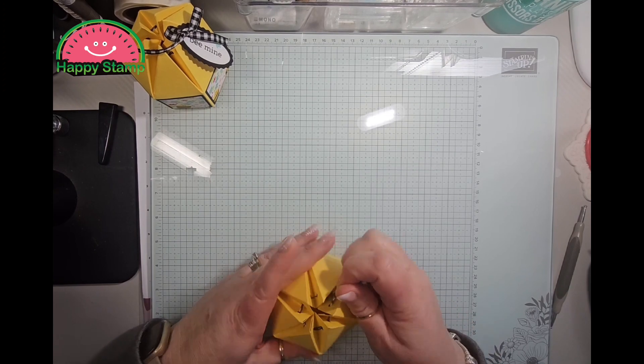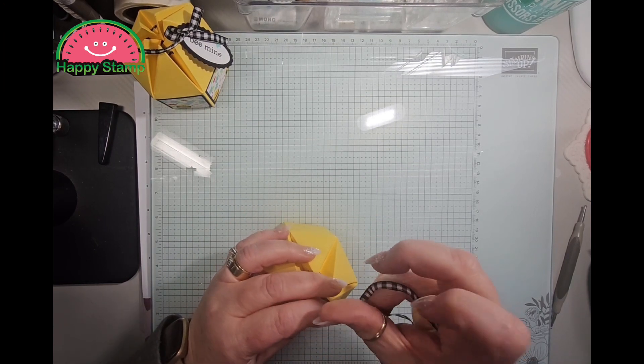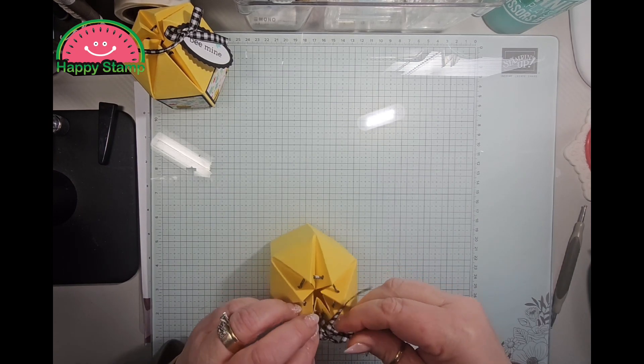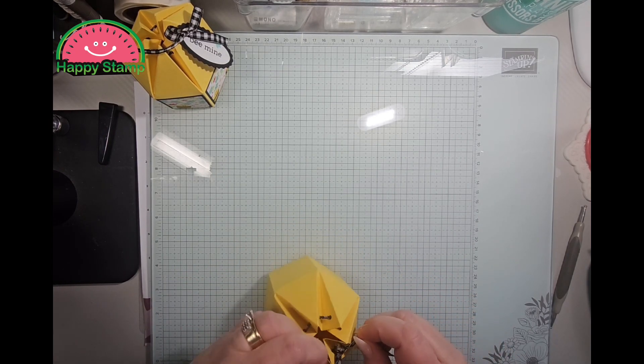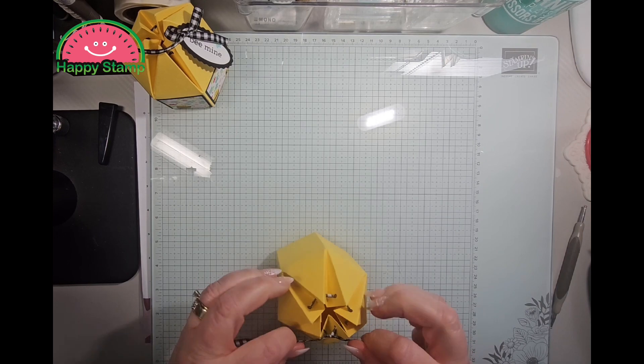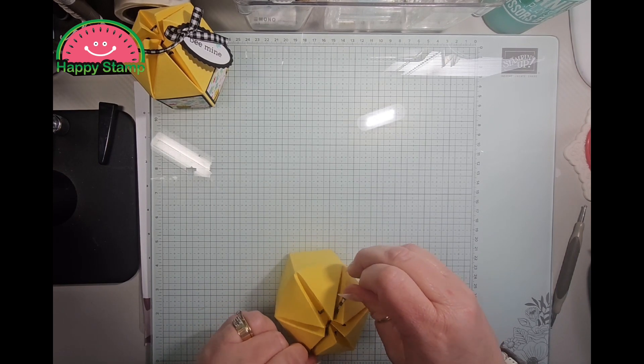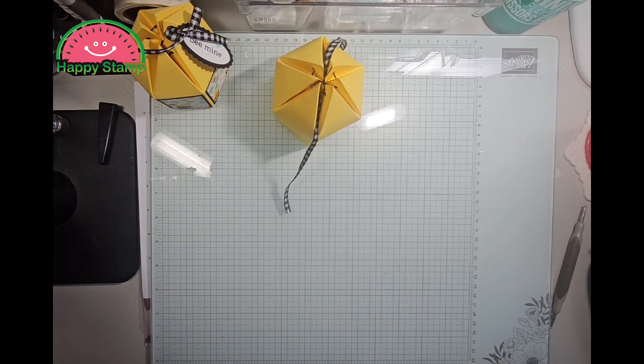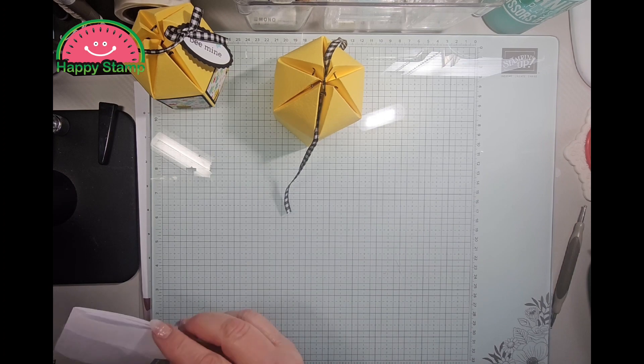All right, one more because I want this to come out. And now we're going to pull it closed. All right, just like that. Then we will tie a bow. Well right now we're just going to do a tie right now. Okay, set that aside for a second.